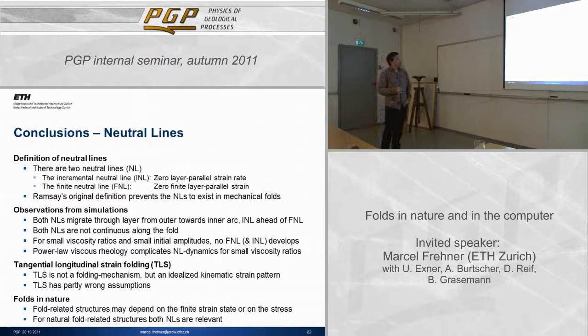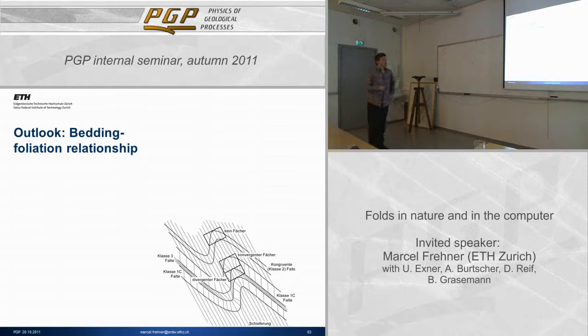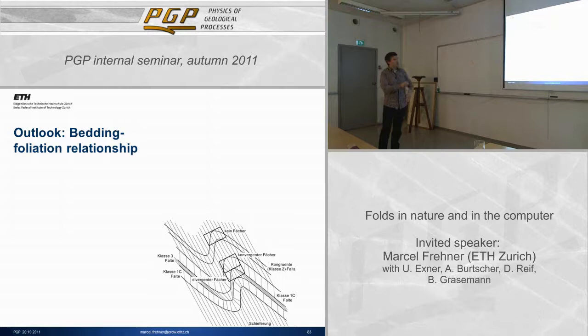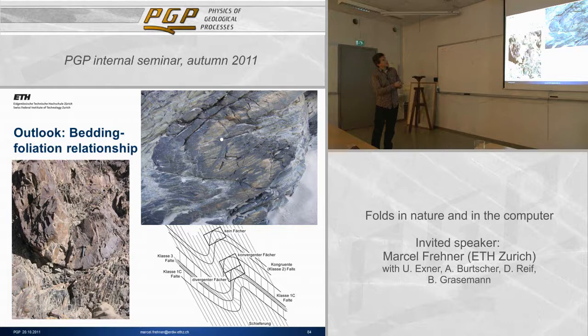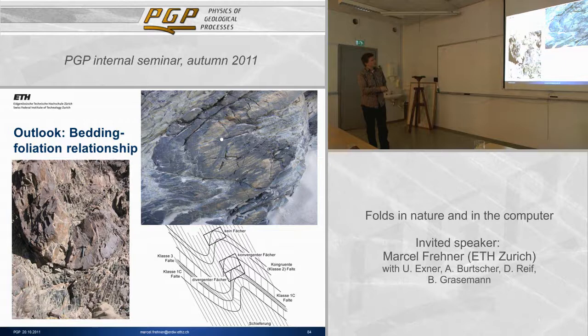Before the second part of the talk, here is a quick outlook. I want to look at fold-foliation relationships. In nature, we sometimes see fanning of foliation around folds — the foliation fans out around the fold both in the stiff layer and in the outer matrix. We want to understand in more detail what this foliation represents.